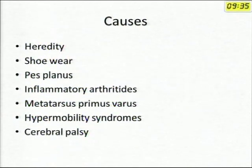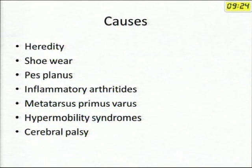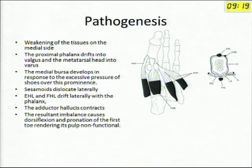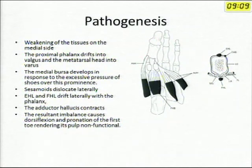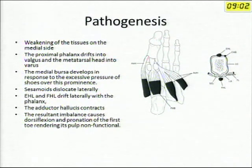Coming to the causes of hallux valgus deformity, heredity has a role because it is mostly seen in the Western population. In India it is rather rare. In India one of the commonest causes is rheumatoid arthritis, with significant hallux valgus and lesser toe deformities. The primary pathology starts on the medial side with wicking of tissues, then the adductor hallucis on the lateral side pulls the P1, the proximal phalanx, into hallux valgus position. The sesamoids dislocate and the deformity progresses gradually.